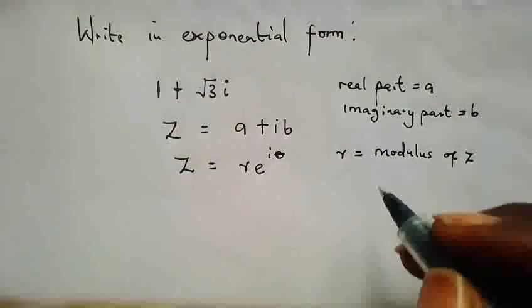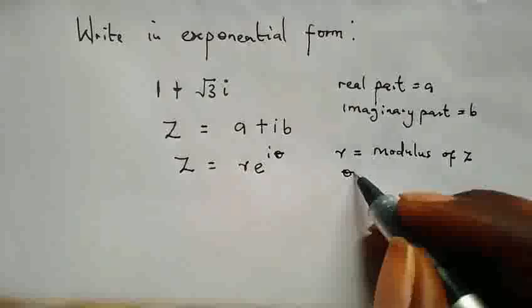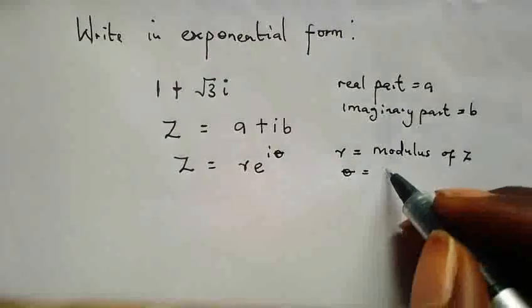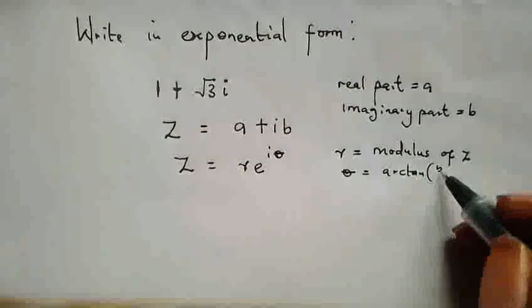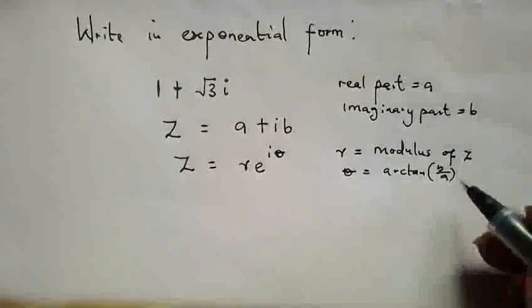And here our theta is equal to the arctan, that is the tan inverse, this is the ratio of B all over A.